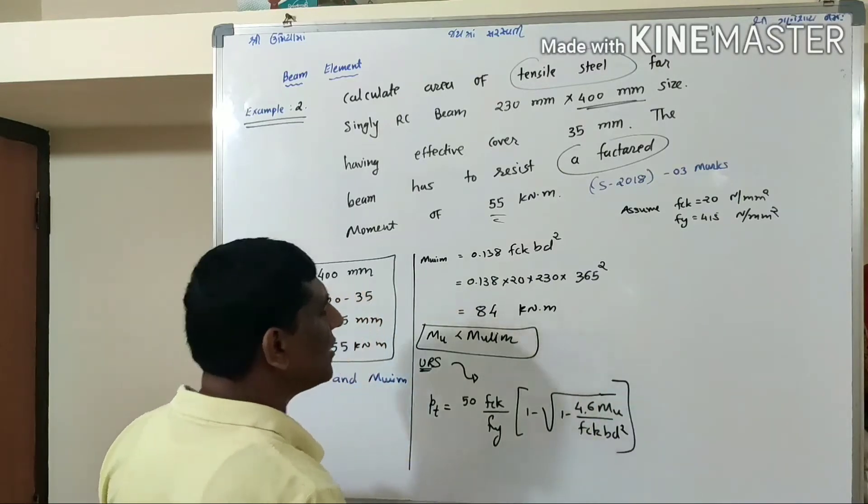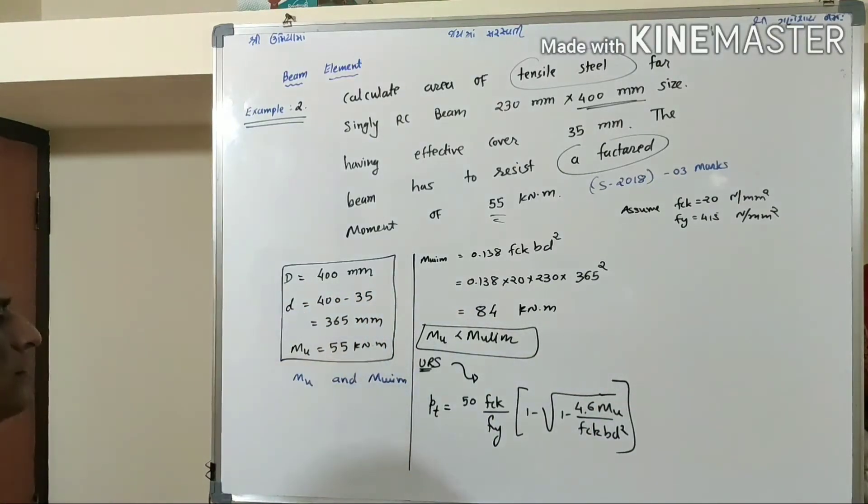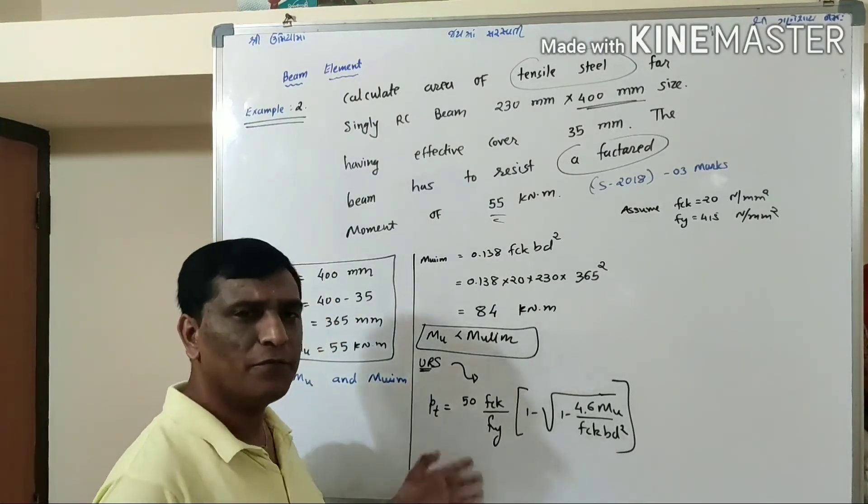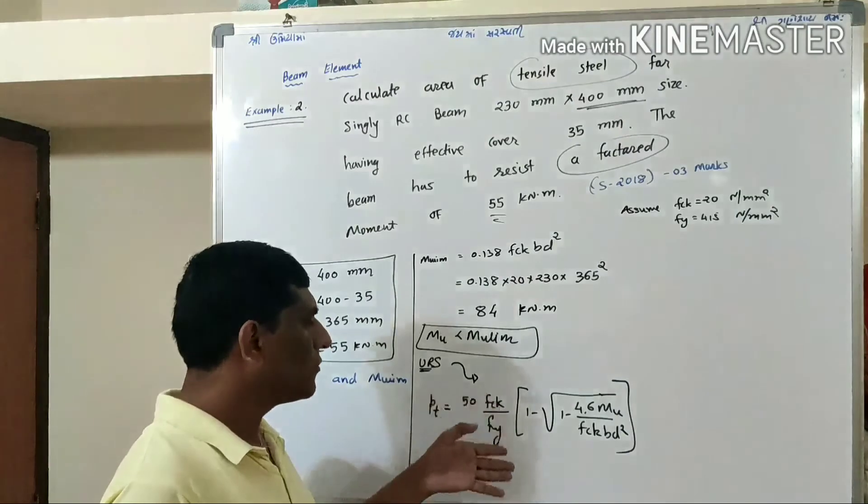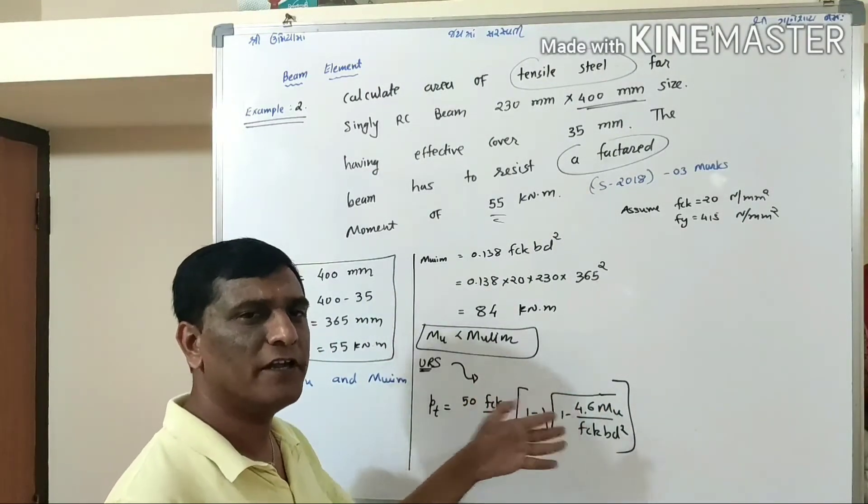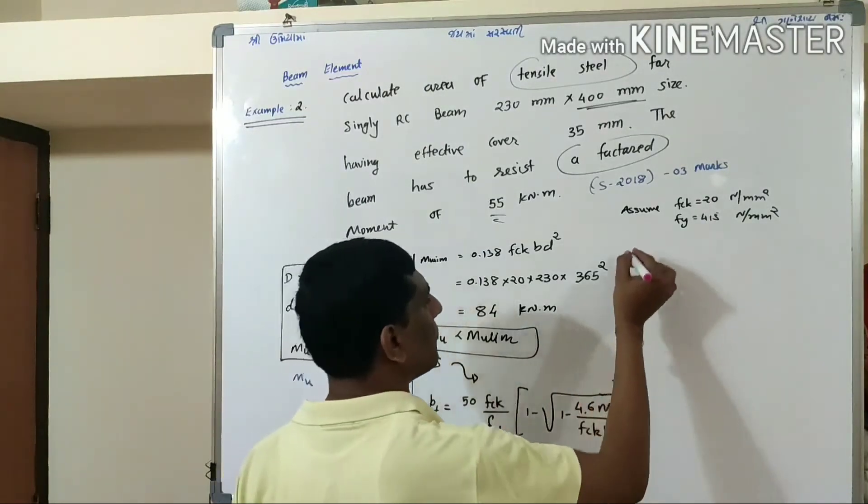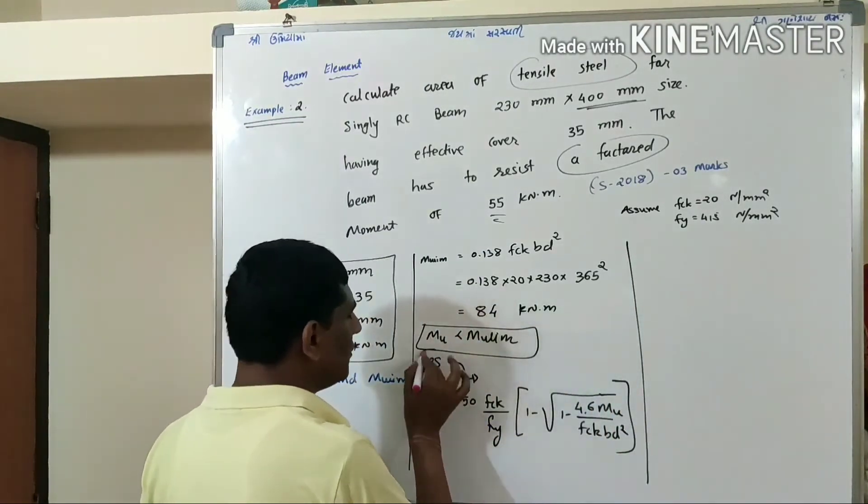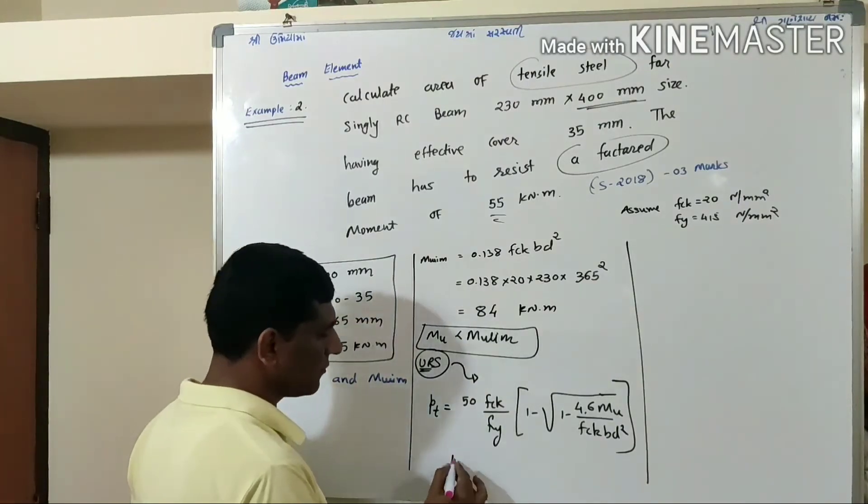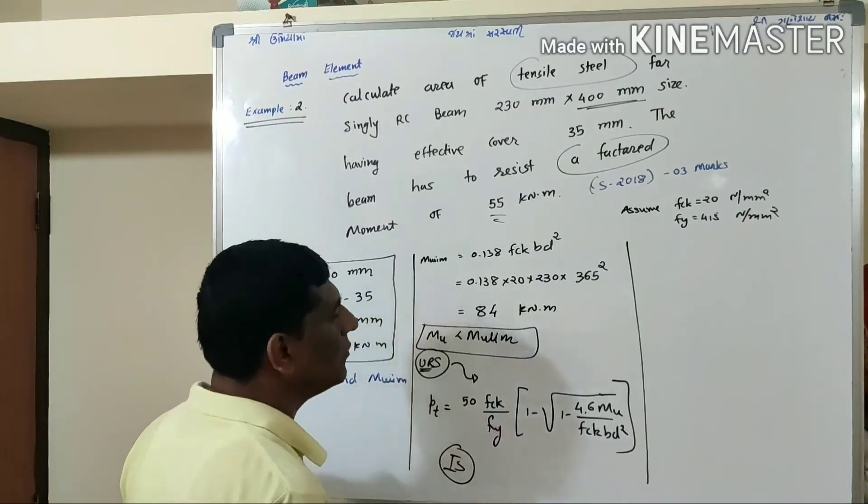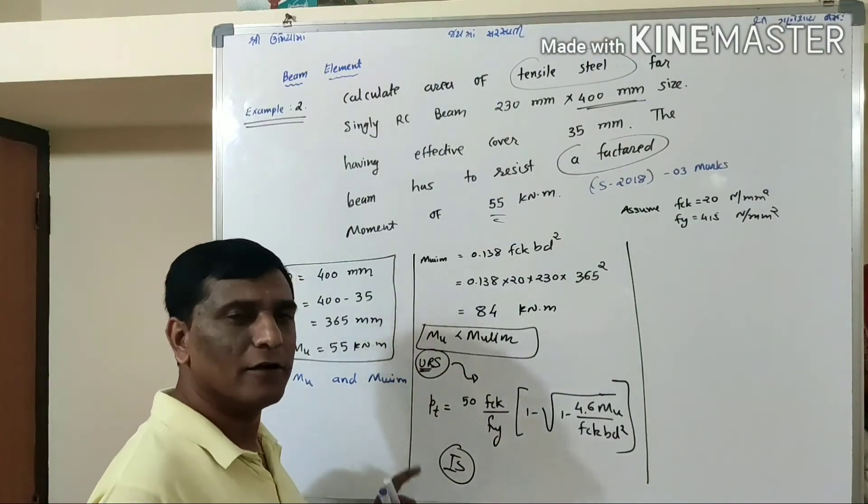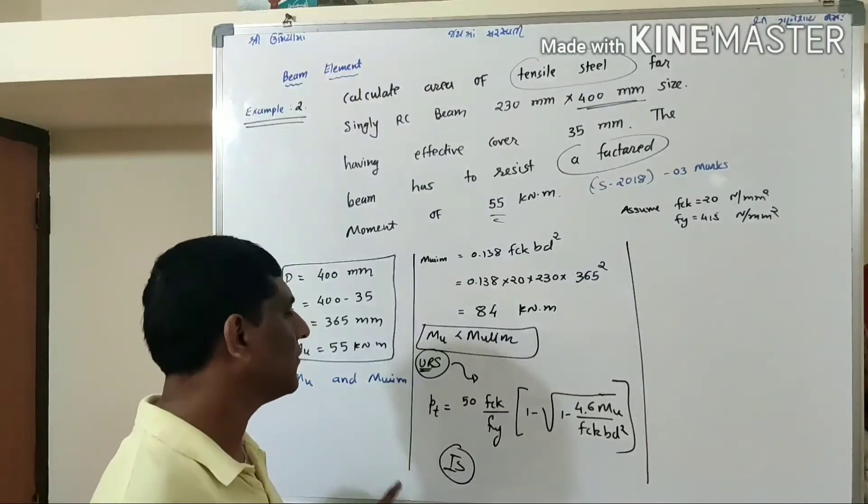So mu is less than mu limiting, the case is for under-reinforced section. Now for any under-reinforced section, PT can be predicted by this formula. It may look difficult but actually it is not too much difficult. But for the URS case you have to remember it, it is not given in IS 456.